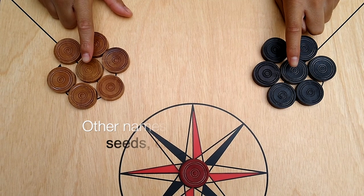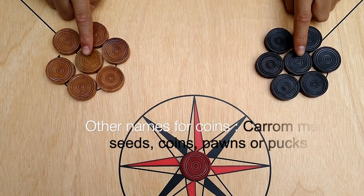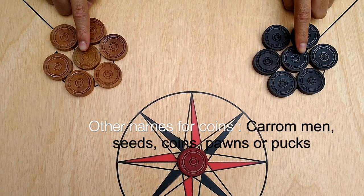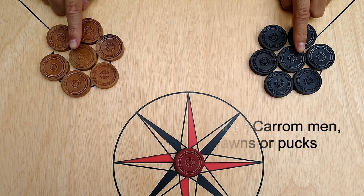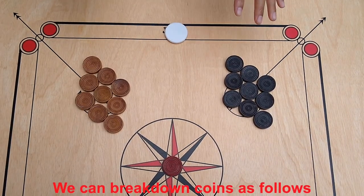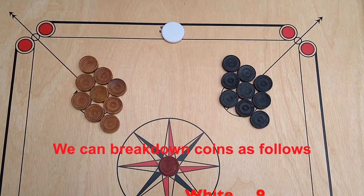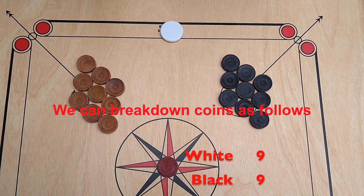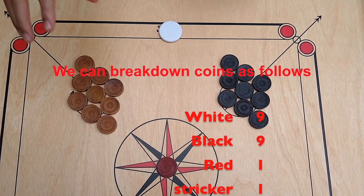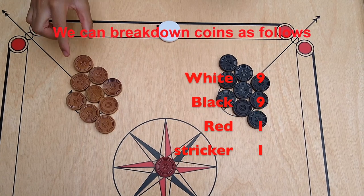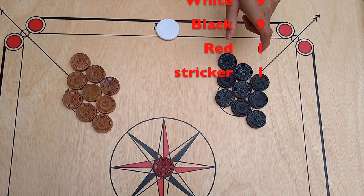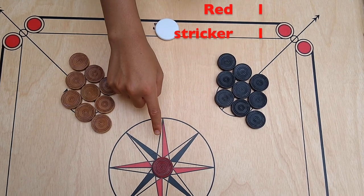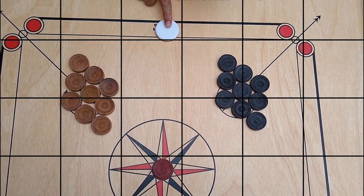These are the small discs that we use to play Carrom. These discs are also known as carrom men, seeds, coins, pawns, or pucks. The game includes 19 pieces or discs and one striker. We have nine white discs, nine black discs, one red disc, and the striker.